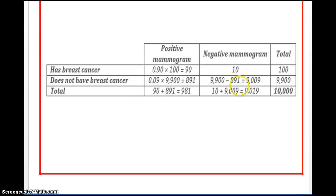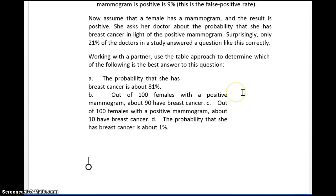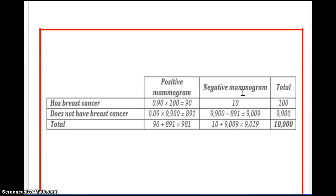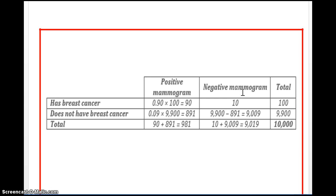Now we have all our figures. Let's come back to the question: assume a female has a mammogram and the result is positive — given a positive mammogram, what is the probability she has breast cancer? How many people have a positive mammogram? 981. Out of those, how many have breast cancer? 90. So it's 90 out of 981, which is roughly 1 out of 10 or 11.